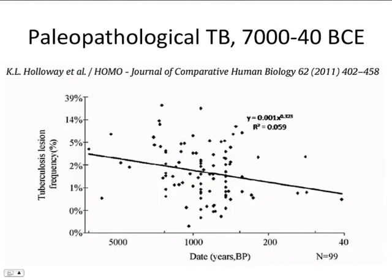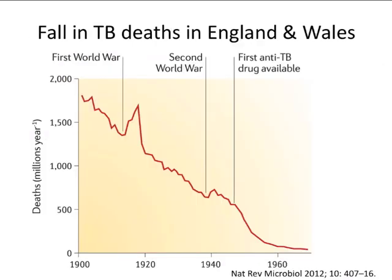Now let us examine time trends in TB. Paleopathological evidence from 7000 BCE suggests that TB was a very common cause of death in prehistorical times, and that the risk of dying from TB very slowly declined over the past several millennia. More recent evidence from countries with nationwide records of deaths over the past century indicates that TB declined well before effective treatment became available. Contributing factors include economic development, improved nutrition, living conditions, and improved hygiene.